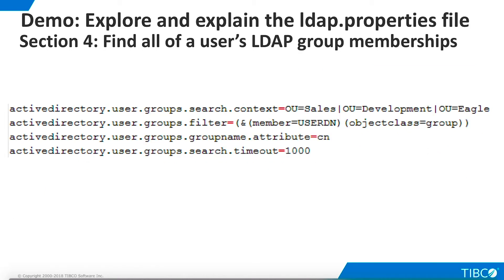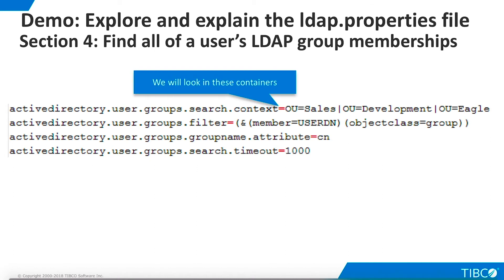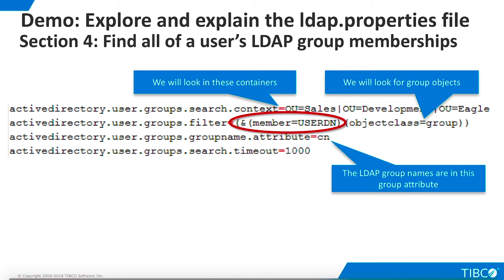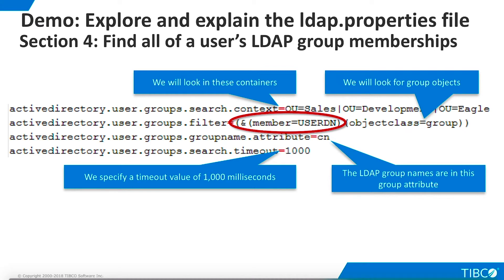Section 4 defines the parameters that TDV will use to find all of a user's LDAP group memberships. We specify that TDV should search three organizational unit containers — Sales, Development, and Eagle. We specify that we are looking for group objects that have a member with the distinguished name that will be passed by TDV. The group name we want returned to TDV resides in the LDAP CN or Common Name attribute. We specify a timeout period of 1,000 milliseconds.